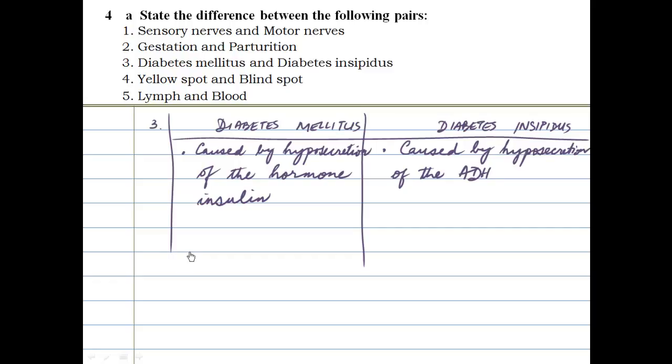Now if required, we could have also put down diabetes mellitus urine expelled containing a lot of sugar, whereas insipidus does not contain sugar. That would also have been fine. Let's move on to the next one. The yellow spot and the blind spot.